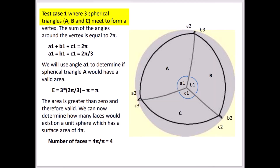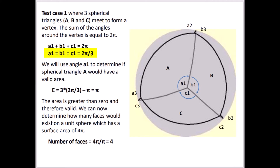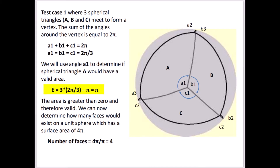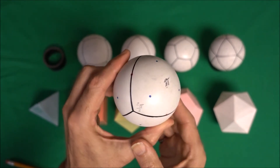For test case 1, we have three spherical triangles A, B, and C meeting to form a vertex. The sum of the angles around this vertex is equal to 2π, so each angle equals 2π/3. Plugging these values into Girard's theorem, the area equals π, which is greater than zero — a valid test case. Knowing that the complete surface area of the sphere is 4π, this would divide the sphere into four equal sections, corresponding to a spherical tetrahedron.